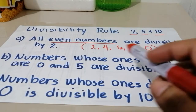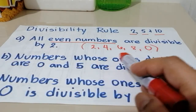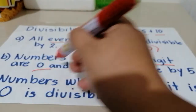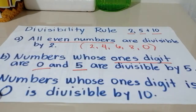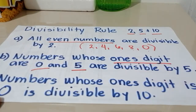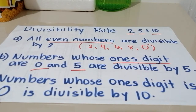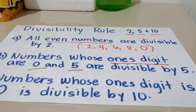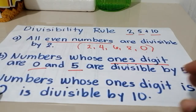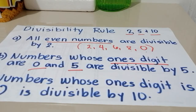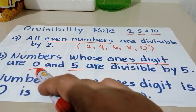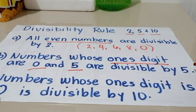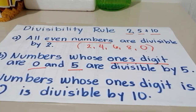Next, if a number whose ones digit is 0 or 5, those numbers are divisible by 5. So wag nyo kalilimutan, if the ones digit or the ending digit ends with 0 or 5, then that number is divisible by 5.